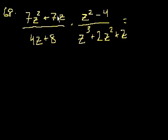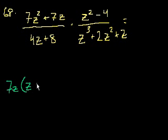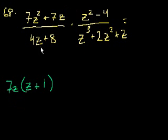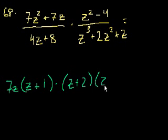Both terms in the first numerator are divisible by 7z, so that top part becomes 7z times z plus 1. When we multiply fractions, it's just numerator times numerator over denominator times denominator. The second numerator is z squared minus 4, which is a difference of squares: that factors as z plus 2 times z minus 2. For the denominator of the first fraction, we can factor out a 4, giving 4 times z plus 2.